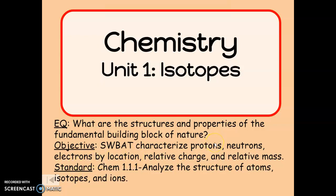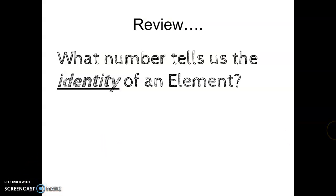Hey guys, welcome back. So far we have talked about the structure of our atom and how to arrange our elements in the periodic table, and today we're going to keep it moving by talking about isotopes. Quick review: what number tells us the identity of an element? That number is the atomic number. On our elemental box on the table, it's on the top, and it's always a whole number. Our atomic number is also equal to the number of protons in the nucleus of an atom. So our atomic number tells us our element and how many protons we have.